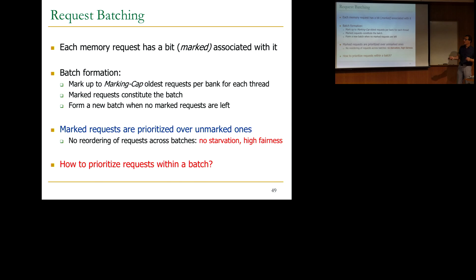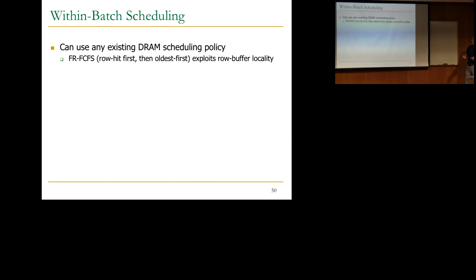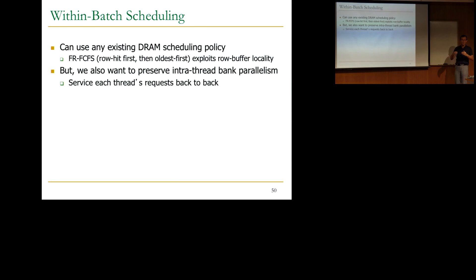The key question is how do you prioritize requests within a batch? Within the batch you can use any existing DRAM scheduling policy like FR-FCFS, which exploits row-buffer locality. But we also want to preserve intra-thread bank parallelism, and unfortunately these two are at odds with each other. To preserve intra-thread bank parallelism, you need to service each thread's requests back to back. So the paper introduces the idea of ranking the threads — you compute a ranking when the batch is formed, and higher-ranked threads are prioritized over lower-ranked ones.